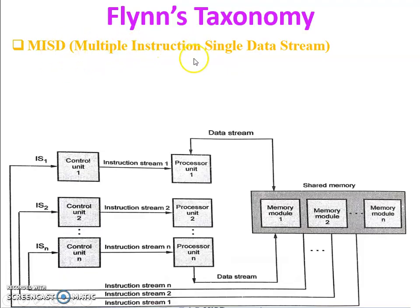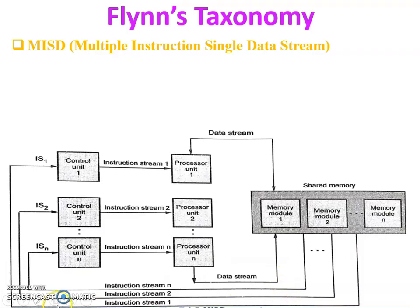MISD stands for multiple instruction stream and single data stream. In the figure, shared memory is divided into memory modules and there are one to N processors, each with an individual control unit. Instructions are fetched from shared memory and multiple instructions are given to the processors — each processor gets a different instruction. However, the data is the same for all processors. Control unit one gives a different instruction to processor unit one compared to control unit two giving to processor unit two, but single data is shared.